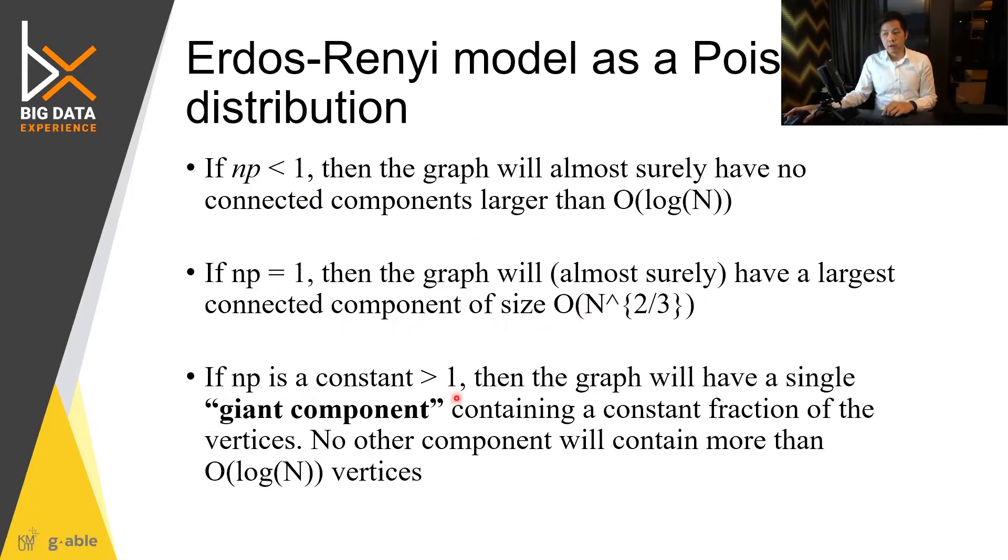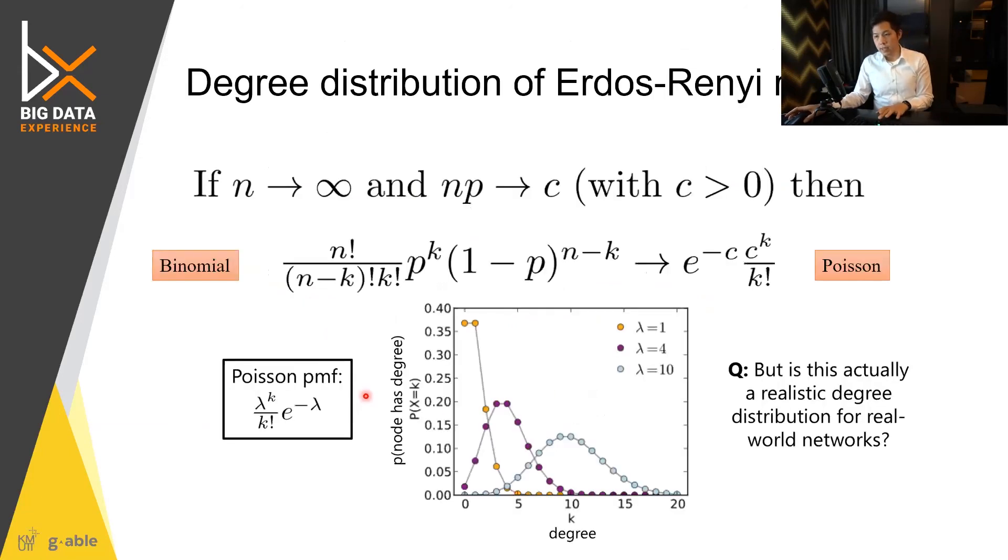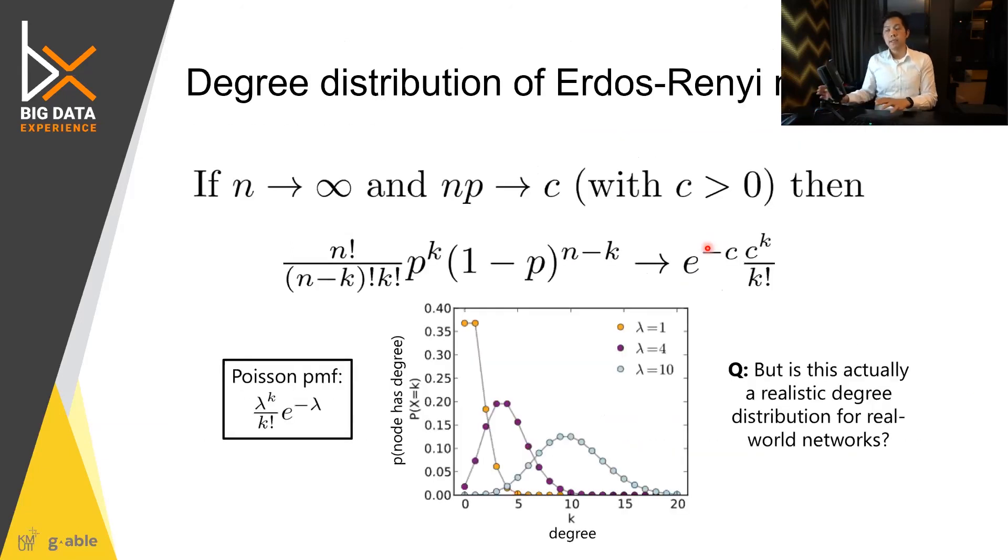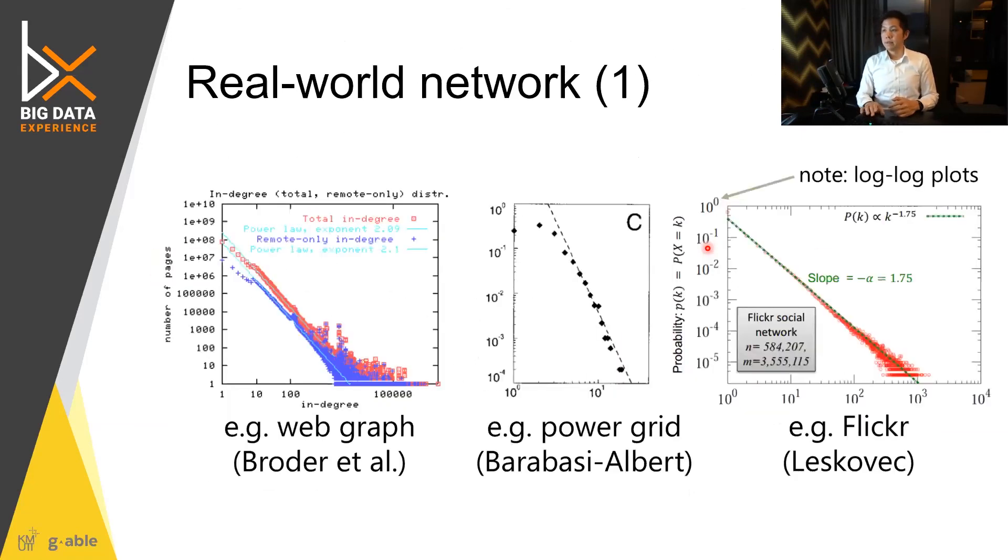If NP is constant more than one, then you have a single giant component, just like this example. This example is that you have about 10. You have mostly connected at 10, but does this reflect reality that often happen?